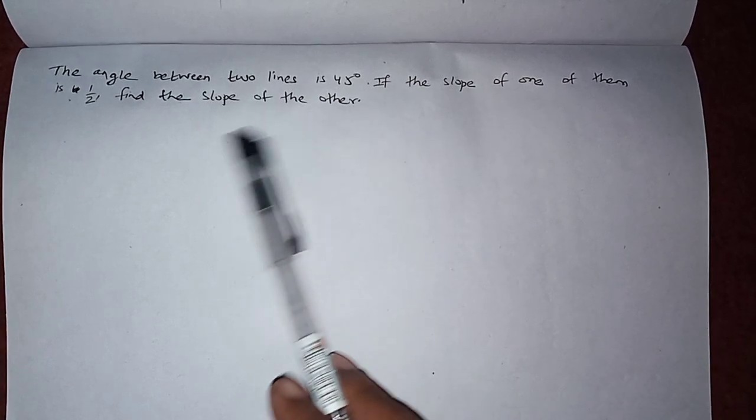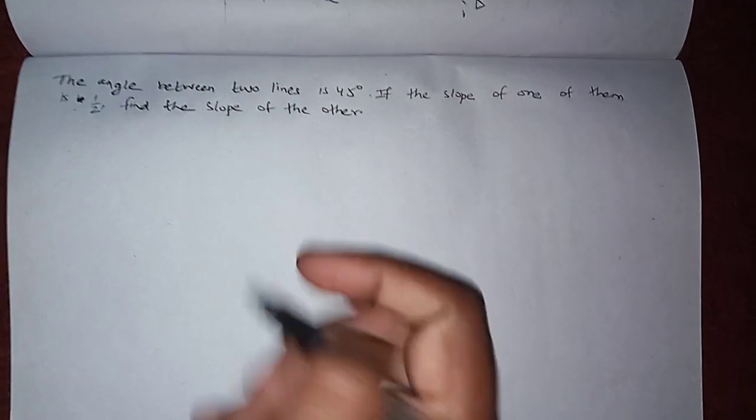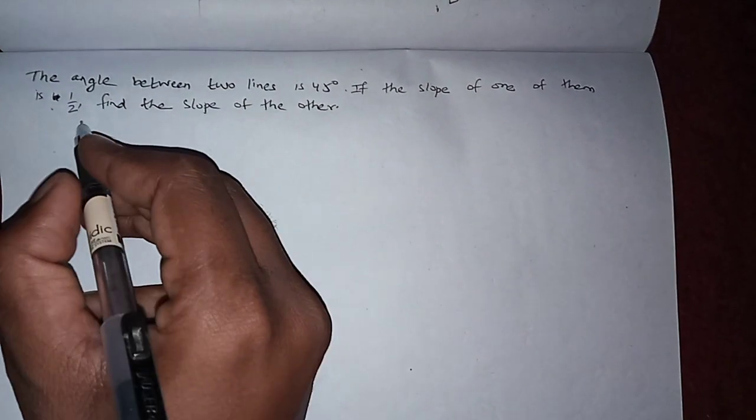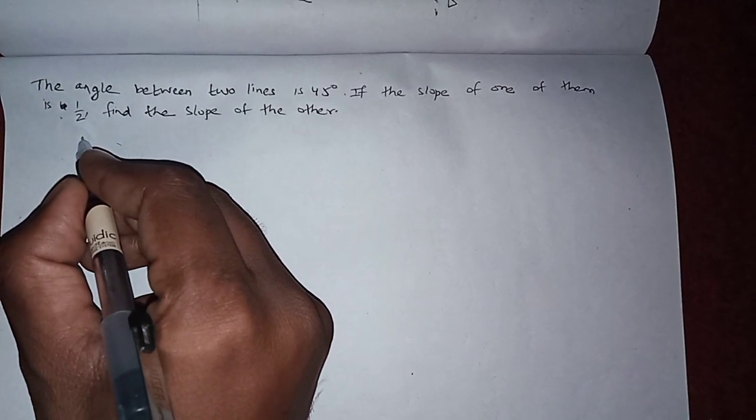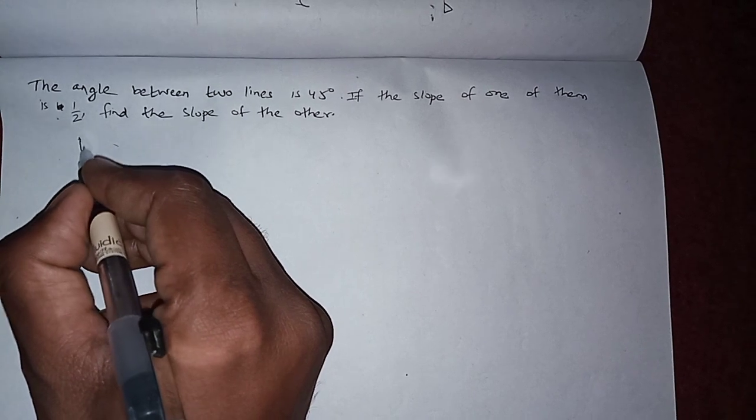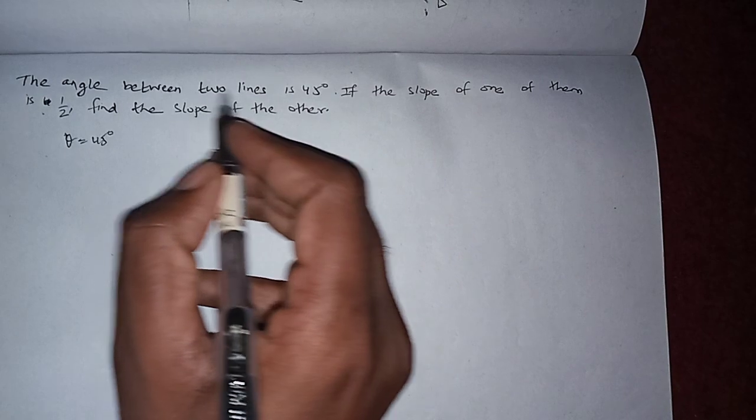If the slope of one of them is 1 by 2, find the slope of the other. So here, angle between two lines is 45 degrees given. So we can say theta is given as 45 degrees.